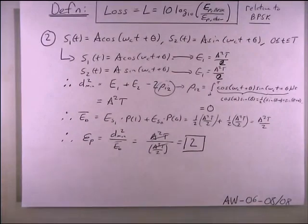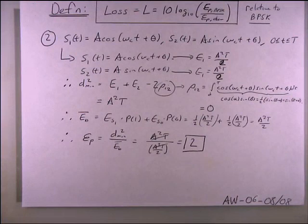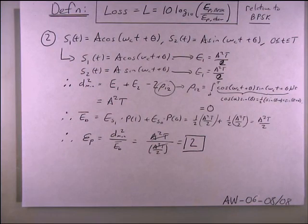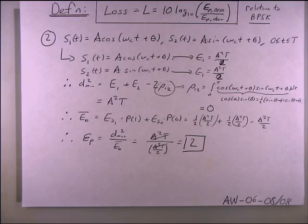Another example: s1(t) = A·cos(ω_c·t) and s2(t) = A·sin(ω_c·t) — a 90° phase separation. The Euclidean distance in the vector diagram corresponds to the hypotenuse between the two points; at 90° separation the hypotenuse is shorter than at 180°. We're still expending the same energy but getting less separation, so the power efficiency is worse — we don't get the most bang for our buck.